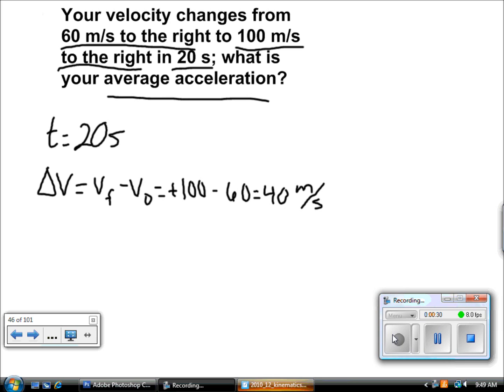Because we are looking for average acceleration, we now have enough information to plug into our equation. Average acceleration is equal to delta v divided by t. Plug in our values, 40 and 20, and we find an average acceleration of 2 meters per second squared. This is positive or to the right.